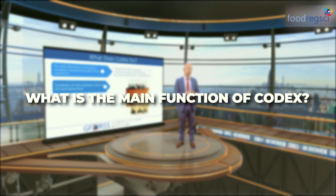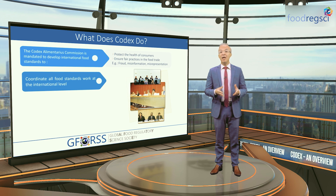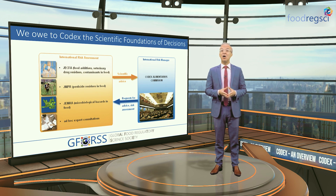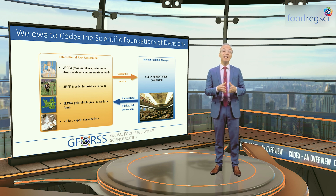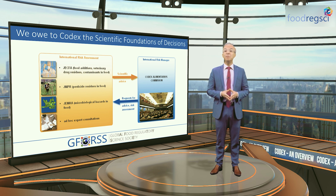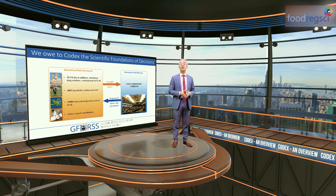The main function of Codex is to develop standards, guidelines, and codes of practice that protect consumers' health and enable fair practices in the food trade. Given that a large part of international food standards relate to food safety and nutrition, these decisions require reliance on scientific or risk assessment carried out by joint expert committees managed by the two parent organizations of Codex, FAO and WHO. Codex is considered the international food risk manager, supported by expert committees that act as international risk assessors dedicated to specific topics.